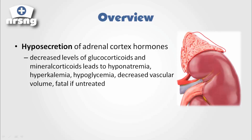The adrenal glands sit on top of the kidney. We have an adrenal cortex and we have an adrenal medulla. Within the adrenal medulla, what we secrete is epinephrine and norepinephrine. From the cortex, we actually secrete steroid hormones — things like glucocorticoids and mineralocorticoids.